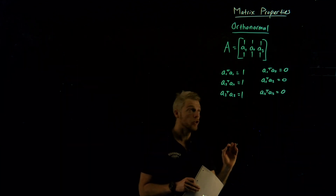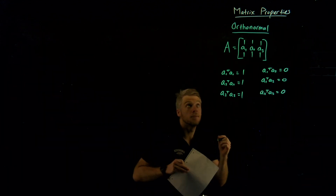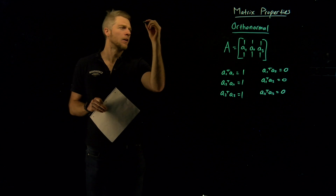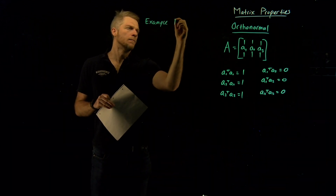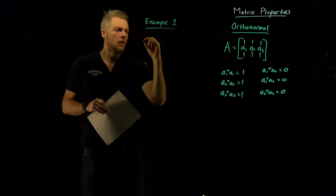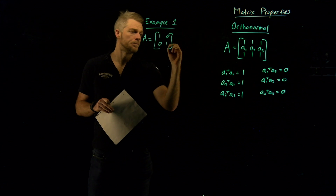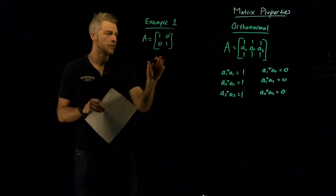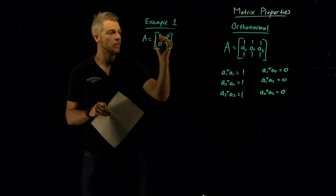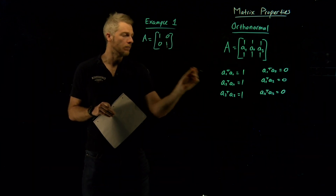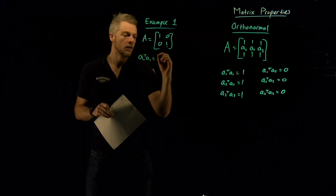I'll be showing you some graphical intuition shortly, but let me first cover a few examples. Example 1: A is equal to the identity matrix. That's a nice clear-cut example. The first column vector is [1, 0] and the second is [0, 1]. A1 transpose A1 is [1, 0] times [1, 0], which is 1 times 1 plus 0 times 0, which is indeed 1, satisfying the first condition.